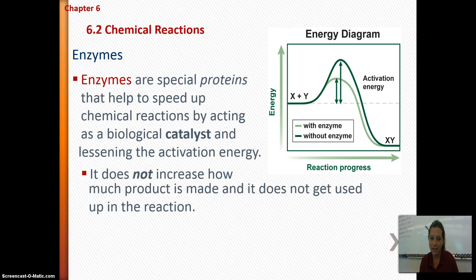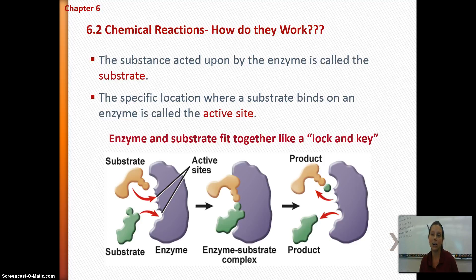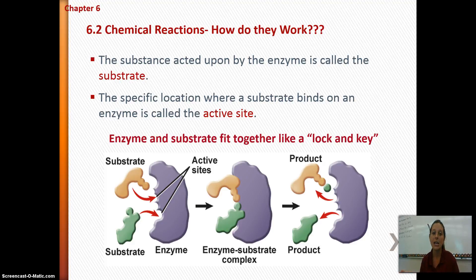Enzymes don't increase how much product is made — they just make the reaction happen faster. And the cool thing about enzymes is that they don't get used up in reactions; they can be used over and over again. Enzymes are shape-specific — we call this the lock-and-key mechanism, because enzymes and their substrates, the thing being acted upon by the enzyme, fit together like a lock and key.